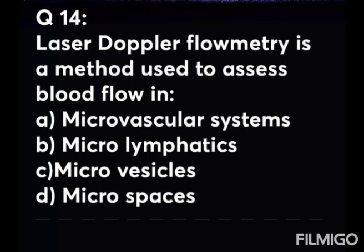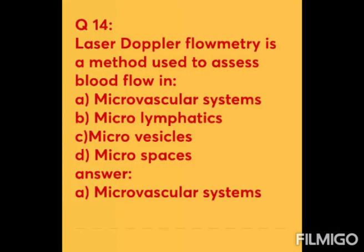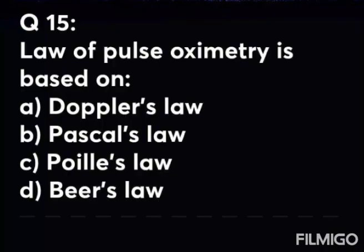Question 14: Laser Doppler flowmetry is a method used to assess blood flow in — Option A: microvascular system. Option B: microlymphatics. Option C: microvesicles. Option D: microspaces. The answer is Option A — microvascular system. Laser Doppler flowmetry is a method used to assess blood flow in the microvascular system.